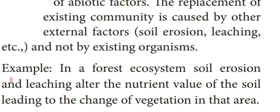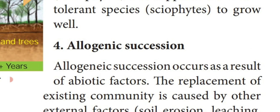For example, in a forest ecosystem, soil erosion and leaching alter the nutrient value of the soil, leading to changes in vegetation. Changes in mineral nutrients present in the soil lead to a change in the vegetation in that area. This is known as allogenic succession.